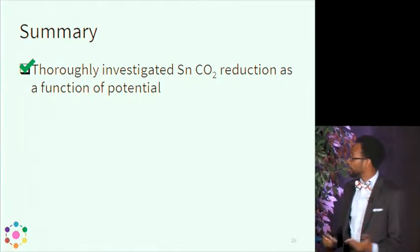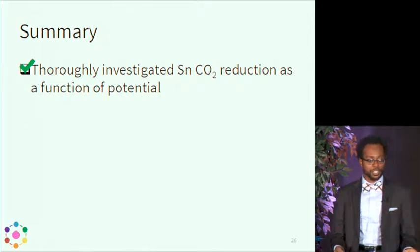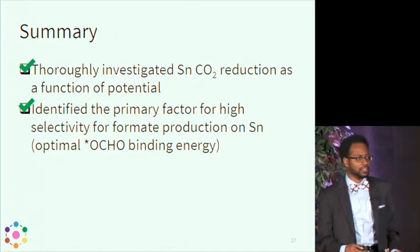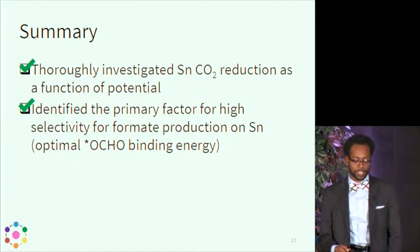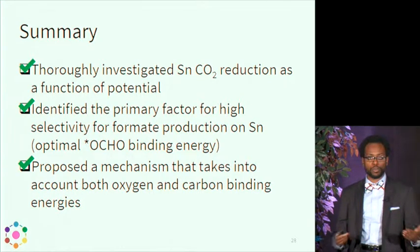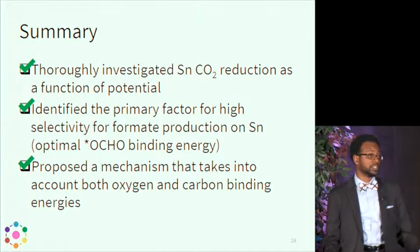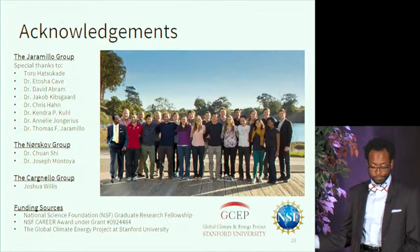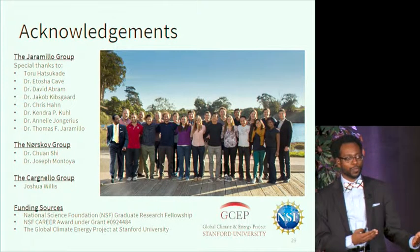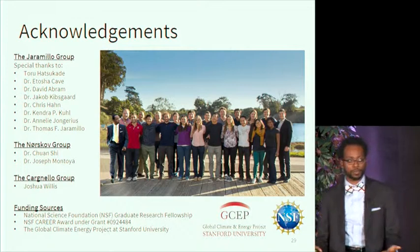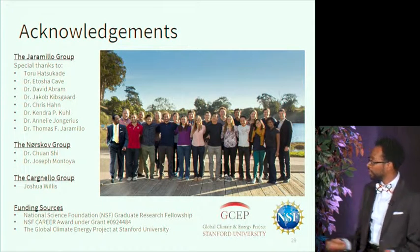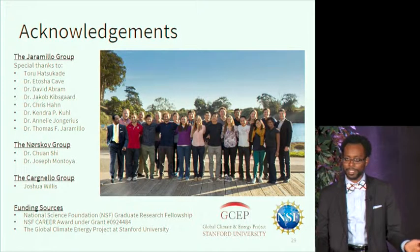In summary, we thoroughly investigated tin for CO2 reduction as a function of potential. We identified the primary factor for high formic acid selectivity on tin electrodes, answering why tin is so good at making formic acid: the OCHO binding mechanism. We also proposed a mechanism encompassing both carbon monoxide and formic acid production pathways for CO2 reduction. I'd like to thank the Haramil group, the Norskov group, the Coniello group, and funding sources NSF and GSEP.